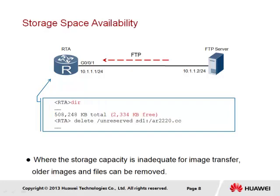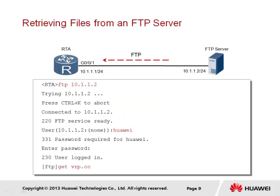Prior to the transfer of files from the FTP server to the client, it is imperative to ensure that enough physical space is available in the client's system storage. Through using the directory command in the user view, we can identify how much space is available in the local current directory. If the free space is less than required for the image transfer, the delete command can be used to remove selected files from the client's storage location. If sufficient free space exists, a connection to the FTP server can be established.